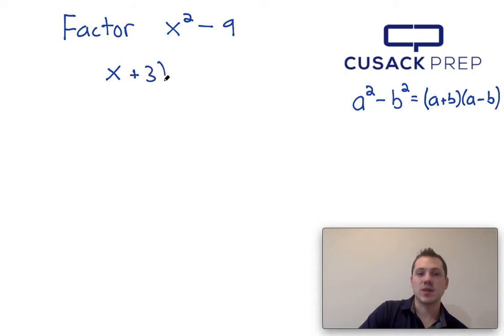So x squared minus 9 factors into x plus 3 times x minus 3.